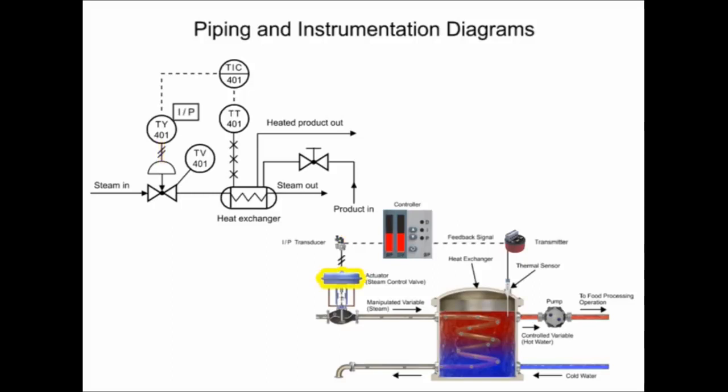The pneumatic control diaphragm actuator that opens and closes the globe valve regulates steam in the process. The actuator is represented by the half circle in the P and ID. The arrow pointing downwards from the actuator indicates a fail closed valve type.